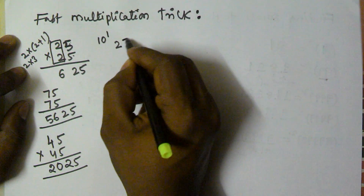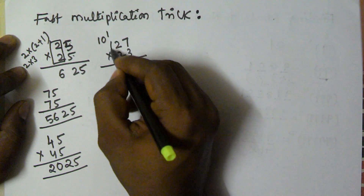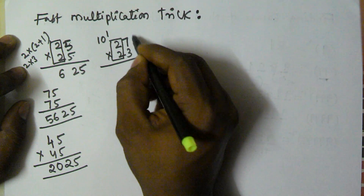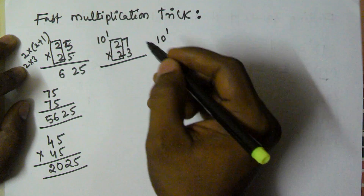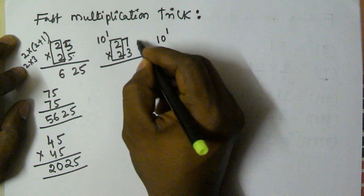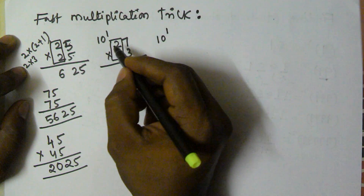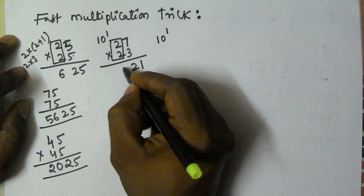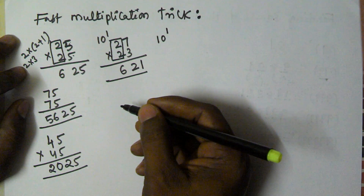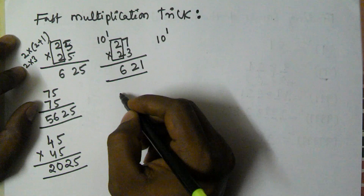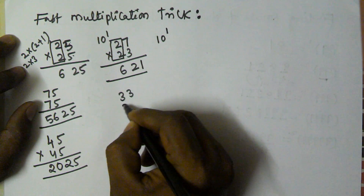This same logic can be extended to other numbers like 27 into 23. Here the leftmost digit is the same and the sum of rightmost digits is 10. We multiply the rightmost digits: 7 into 3 is 21, and then 2 into 2 plus 1 is 2 into 3, which is 6. So the answer is 621. Next, 33 into 37: 7 into 3 is 21, and 3 into 4 is 12, giving 1221.